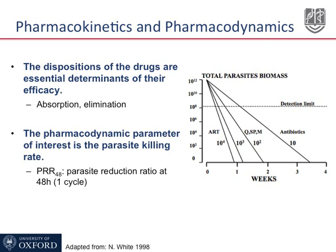There are some basic pharmacokinetic properties of the anti-malarials that are important to know, because the disposition of the drugs in the human body — for example, the absorption or elimination of the drug — are essential determinants for their efficacy. The effect of the drugs on the parasites is measured by the parasite killing rate, specifically the parasite reduction ratio at 48 hours, or PRR. The PRR measures the parasite reduction ratio every 48 hours, that is one parasite cycle.